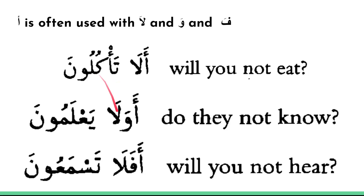Similarly, wa means 'and,' so wala ya'lamun means 'and they do not know.' Adding the alif prefix gives awala ya'lamun — 'do they not know?' — again converting it into a question.